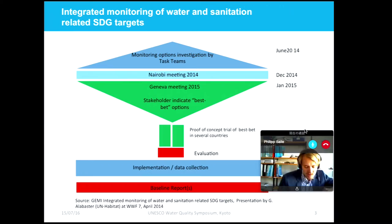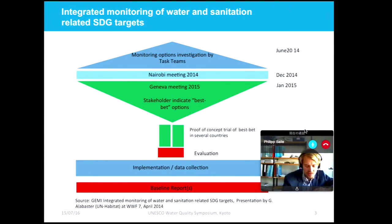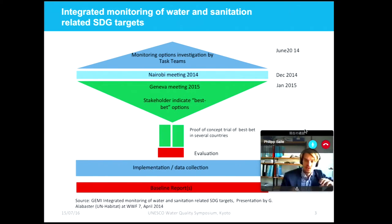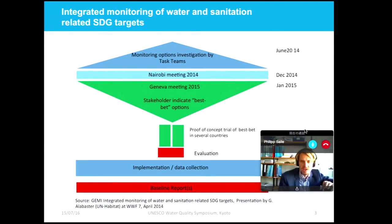As a result, UN Water proposed two core indicators for water quality. One covering wastewater — that is the percentage of wastewater safely treated — and the second core indicator, which is relevant to this talk: the percentage of receiving water bodies with ambient water quality not presenting risk to environment or human health.